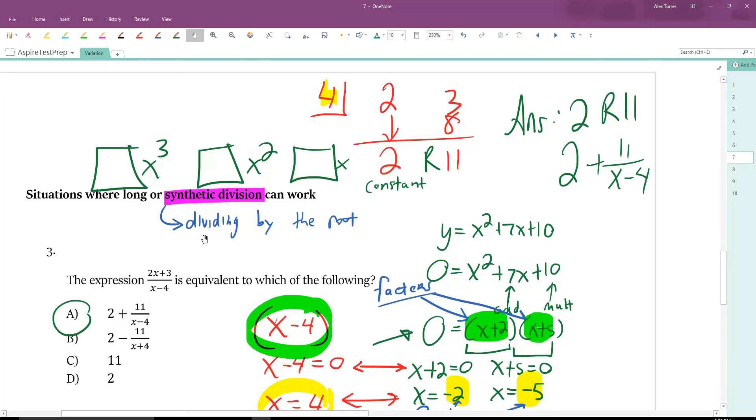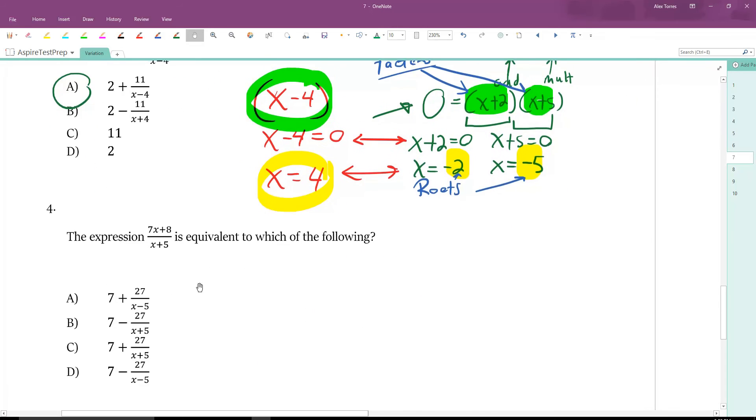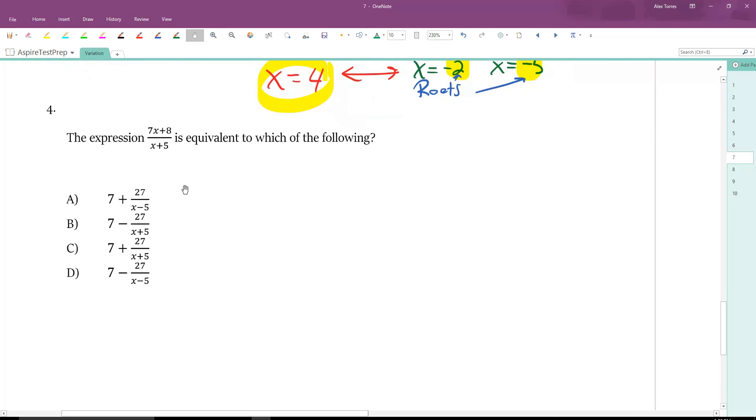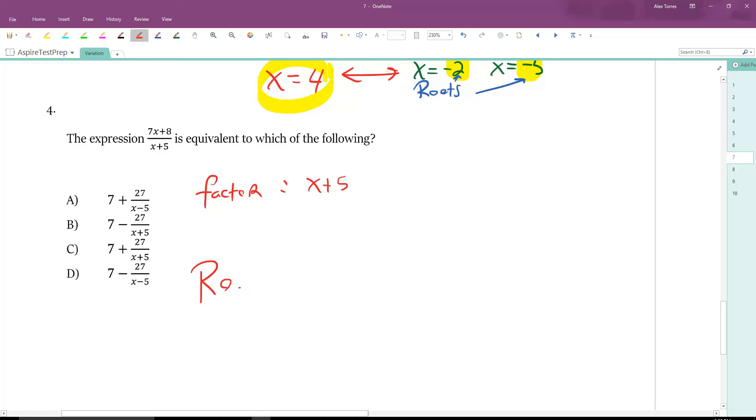So let's practice that synthetic division on question 4 right here. So we have a factor of x plus 5, which is the thing we're dividing by. But in synthetic division, we need the root version of that. So like we said before, the key is to take it and set it equal to 0. Take away 5 from both sides. And that's x equals minus 5. And that is our root. So we have minus 5 in the box.